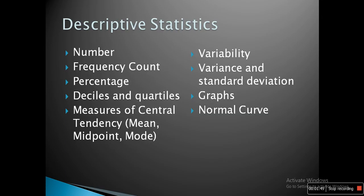In descriptive statistics we deal with numbers, frequency counts, percentages, deciles, quartiles, measures of central tendency — mean, median, and mode — variability, variance, standard deviation, graphs, and normal curves. These are the main tools of statistics used to understand and describe the data — what is the quality of the data.